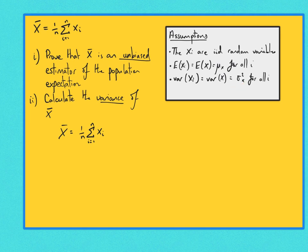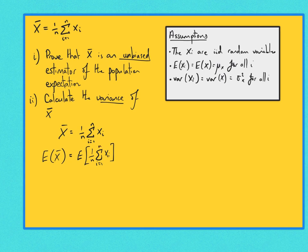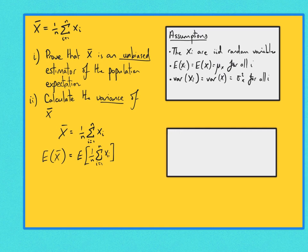So x-bar is equal to 1 over n times by the sum of the xi's. Because if this is unbiased, then the expectation of x-bar would be equal to E of x. So let's find what the expectation of x-bar is equal to. This is equal to the expectation of 1 over n times by the sum of xi. We need to use our rules related to expectations. Remember, the expectation of a linear combination — the expectation of ax plus by, where x and y are random variables and a and b are constants — is equal to a times the expectation of x plus b times the expectation of y.